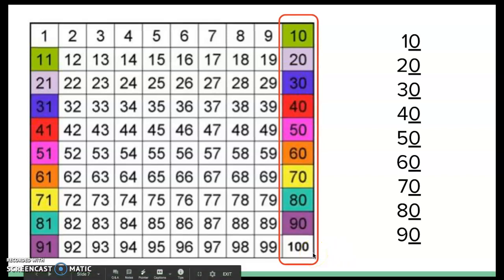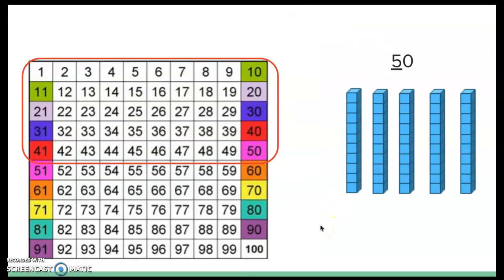Today we're only focusing on two-digit numbers. That's why I stopped at 90, because 90 is the last multiple of 10 that has two digits. When we get to 100, it has an extra digit, so we're only going to be focusing on numbers from 10 to 90. Let's take the number 50 as an example. The number 50 has a 0 in the ones place and a 5 in the tens place. So the number 50 is the same as 5 tens, or 50 ones.